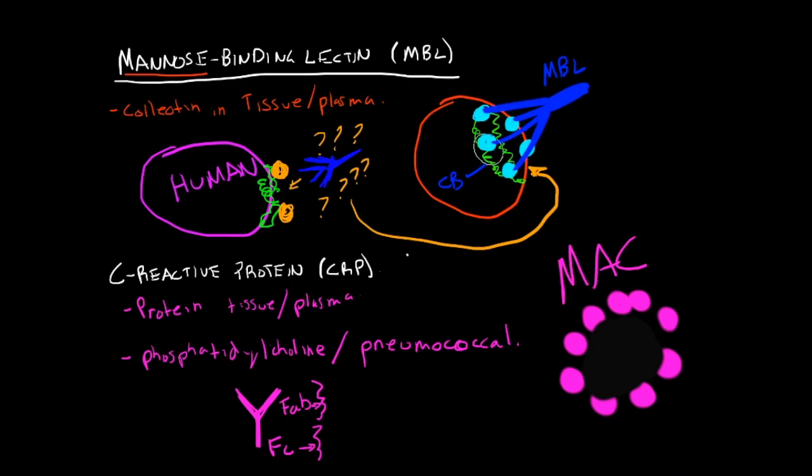And we'll learn more about that. But the mannose-binding lectin, that's how it binds to glycoproteins or carbohydrates. And humans have sialic acid residues. I will write that out just for your reference.